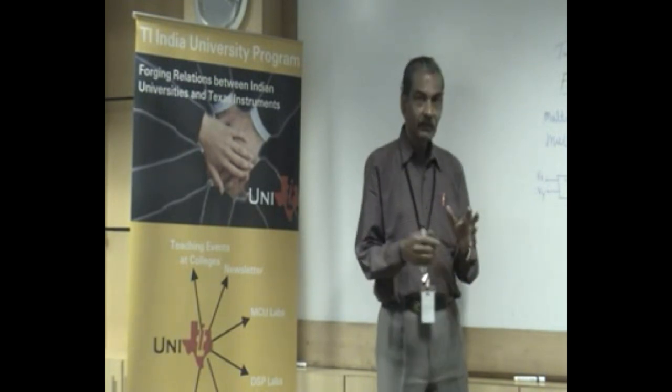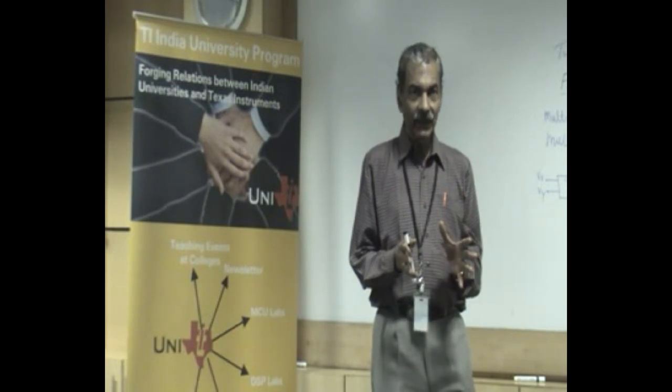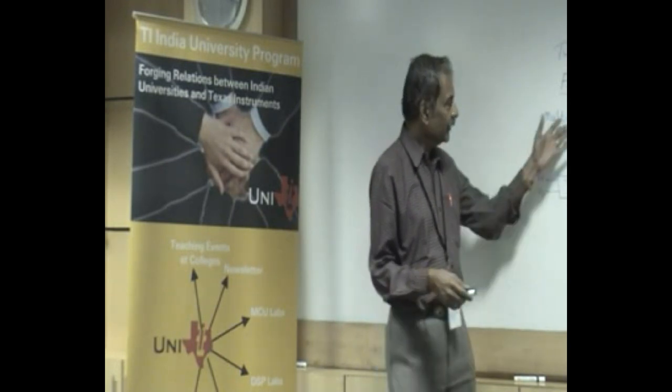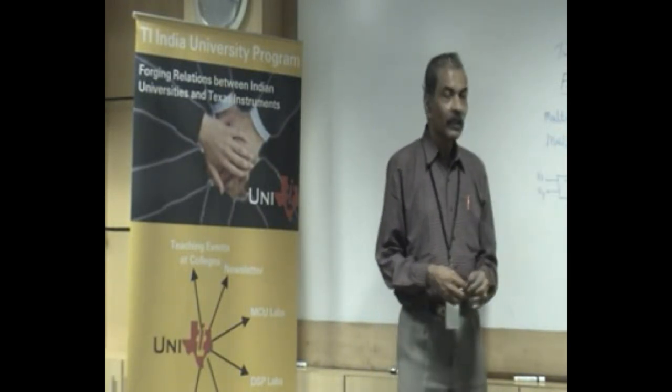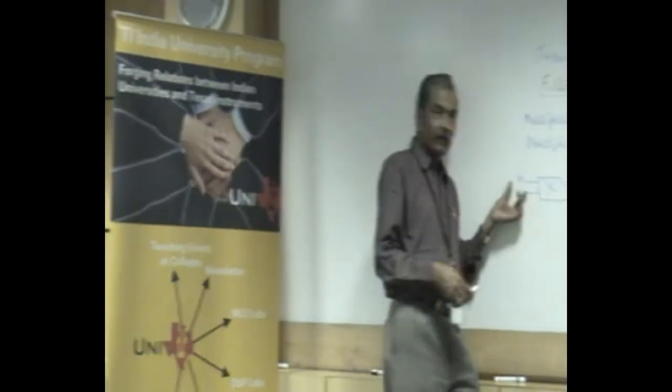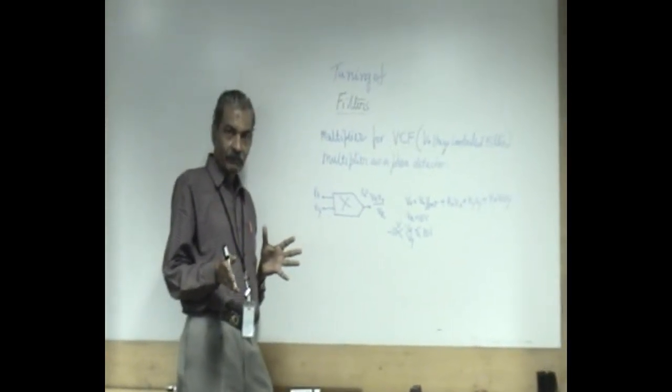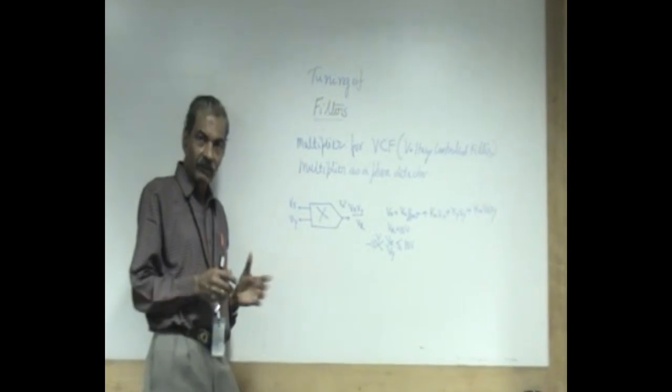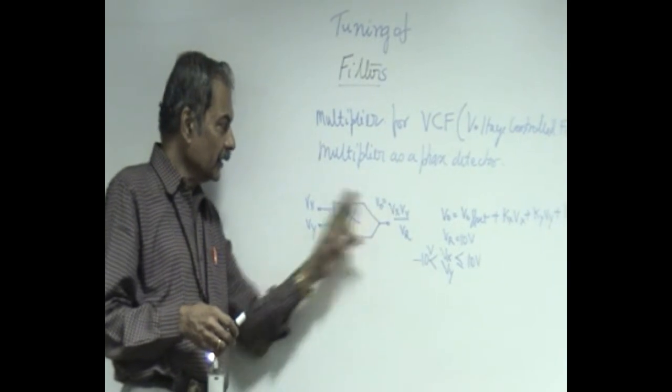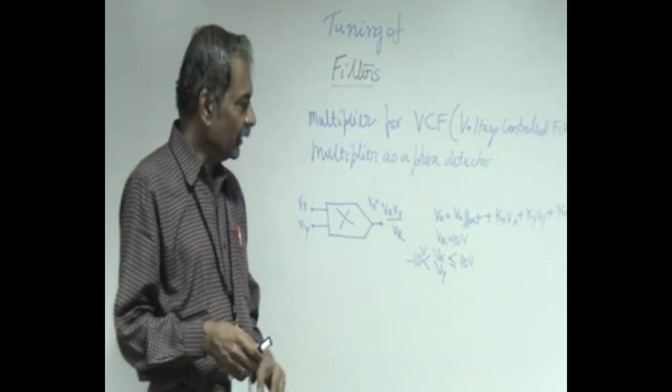How it is done can be explained by understanding first how it is connected into voltage control filter and how the multiplier facilitates this feature and the same multiplier also can be used as a phase detector to tune it properly. Now, what is a multiplier? Multiplier is the next important building block after the operation amplifier. It can be used for a variety of communication applications like multiplier actually gives you an output which is product of the two inputs v_x and v_y and a reference voltage v_r.